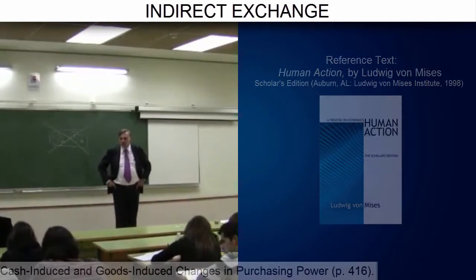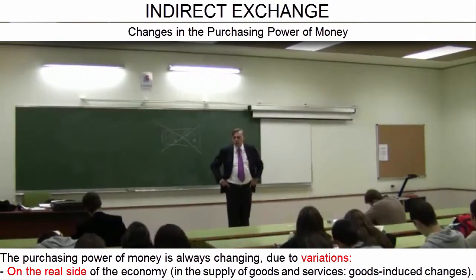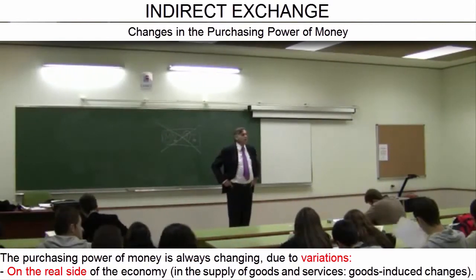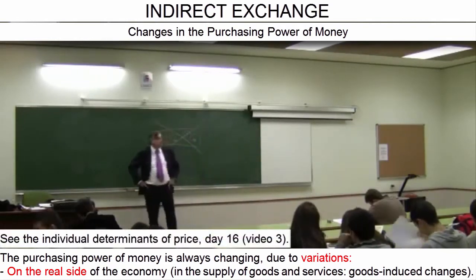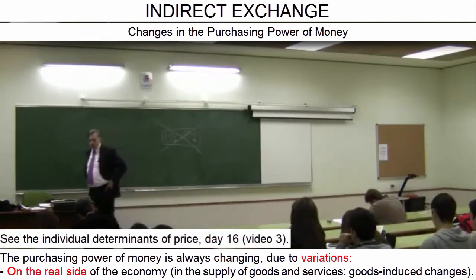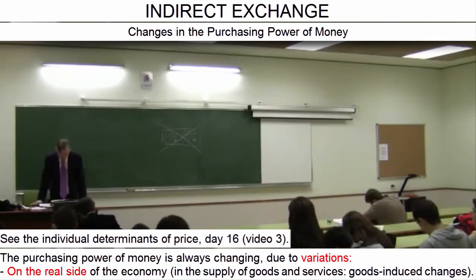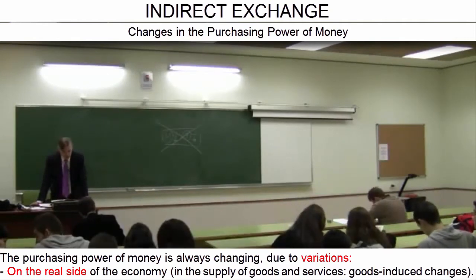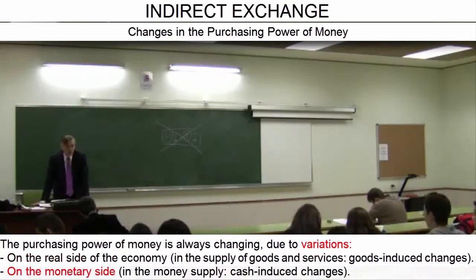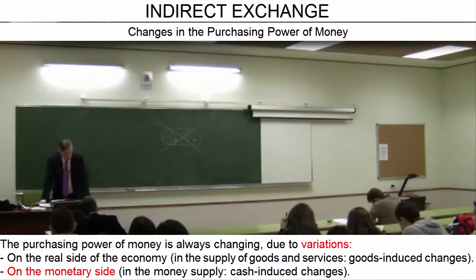Variations in purchasing power originate on the real side when they result from increases or decreases in the supply of goods and services. If there is a poor crop, the price of wheat rises, and therefore the purchasing power of the monetary unit in terms of wheat falls. But the most distorting variations in purchasing power are those which originate on the monetary side — that is, when the quantity of money in circulation increases or decreases.